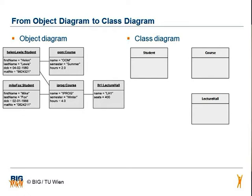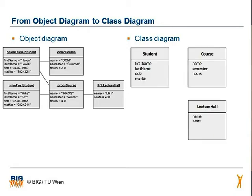Then we have a look at the attributes of each class. Mike Fox and Helen Lewis have the same attributes, so we can copy the attribute names to the class Student. The same is valid for the courses OM and IPROG. We also assume that each object of the class Lecture Hall will have the characteristics name and seats.